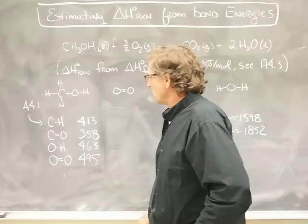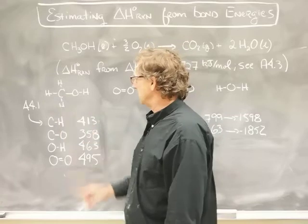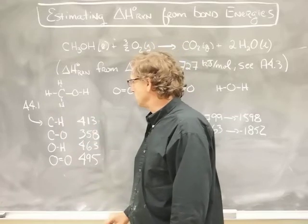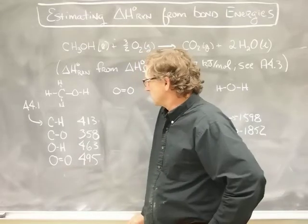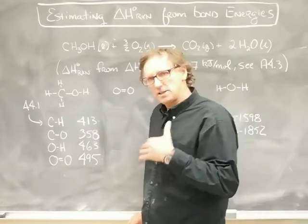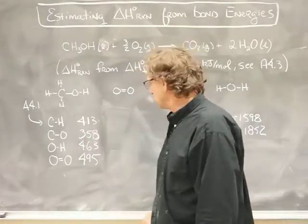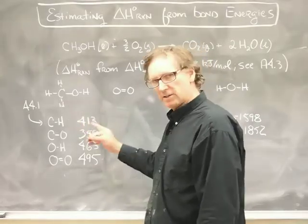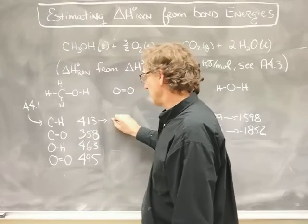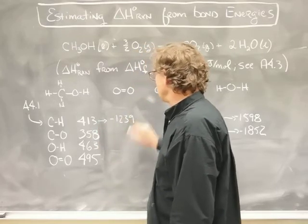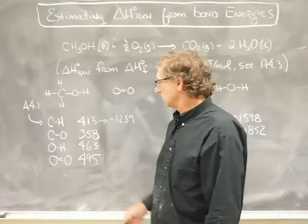There's a couple of manipulations we're going to do on these numbers. One is to count how many of those bonds there are in methanol, and I can see there's three of them. The second point to remember is that bond energy is the negative of the bond strength. So I'll make that a negative and multiply it by 3, which gives me a total of minus 1239 kilojoules per mole for the bond energy.